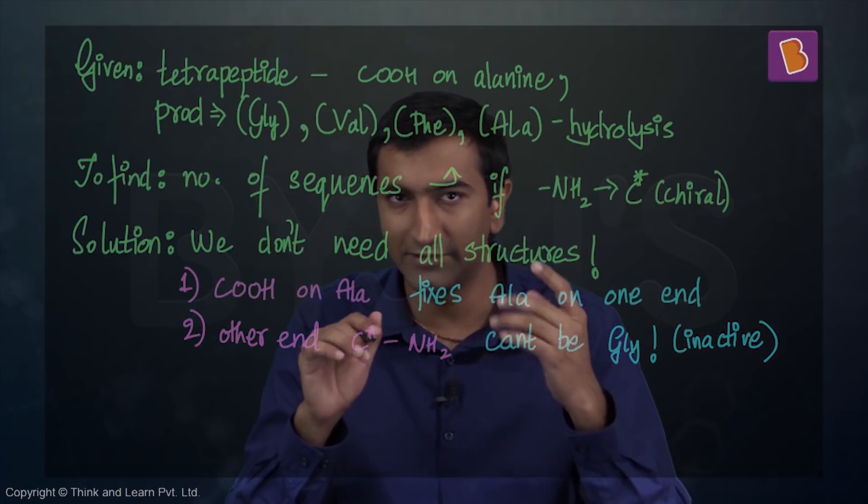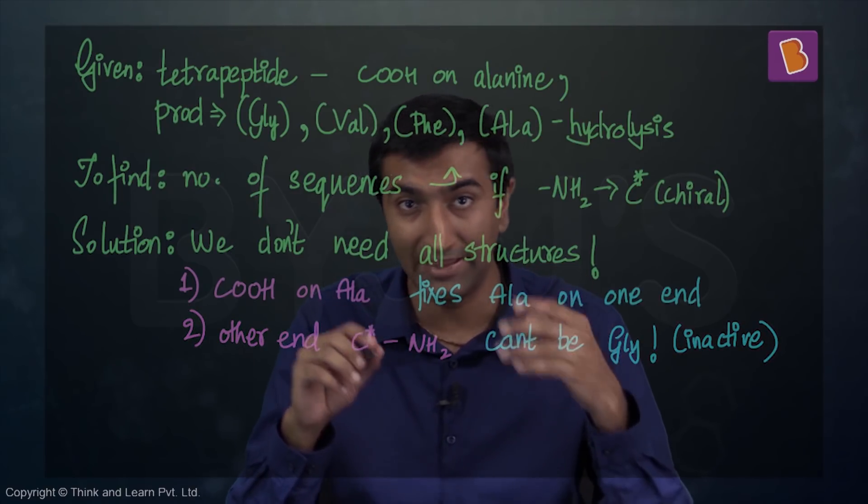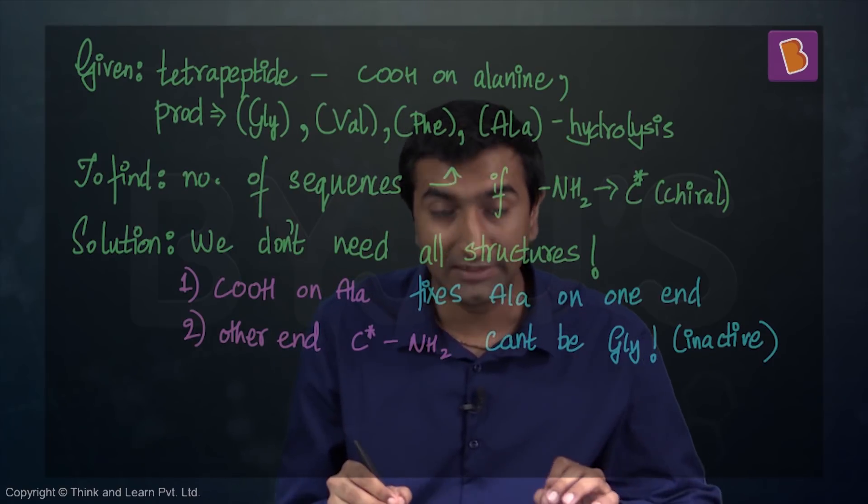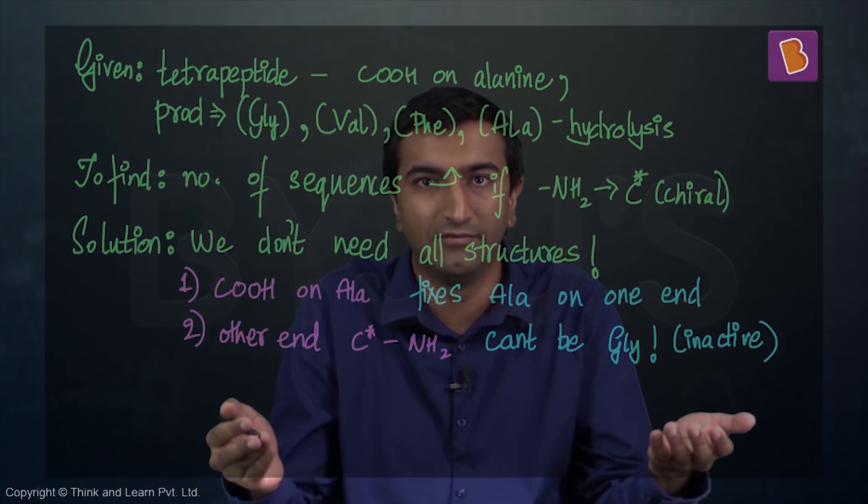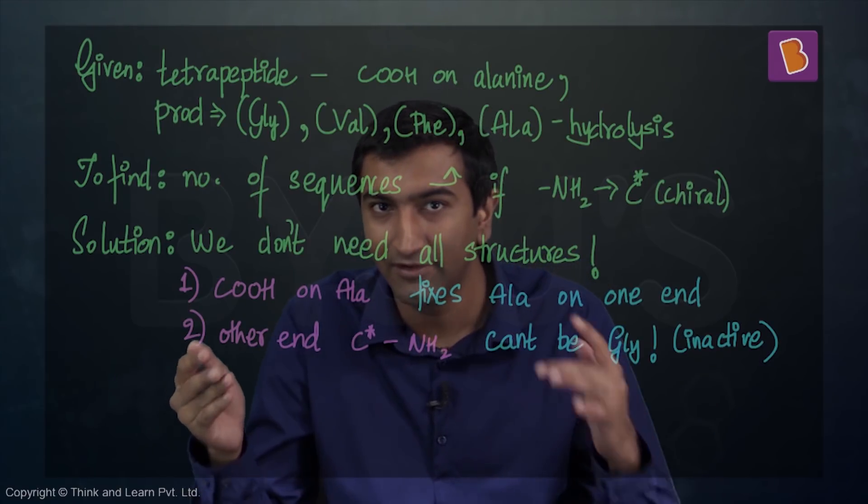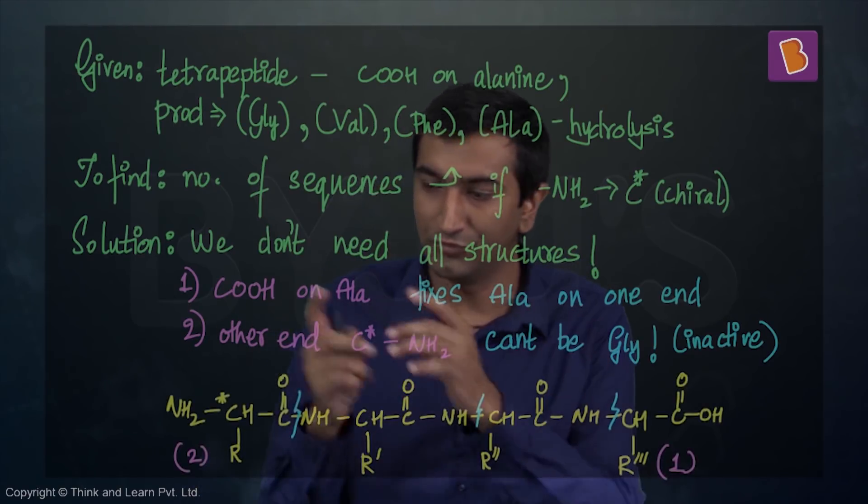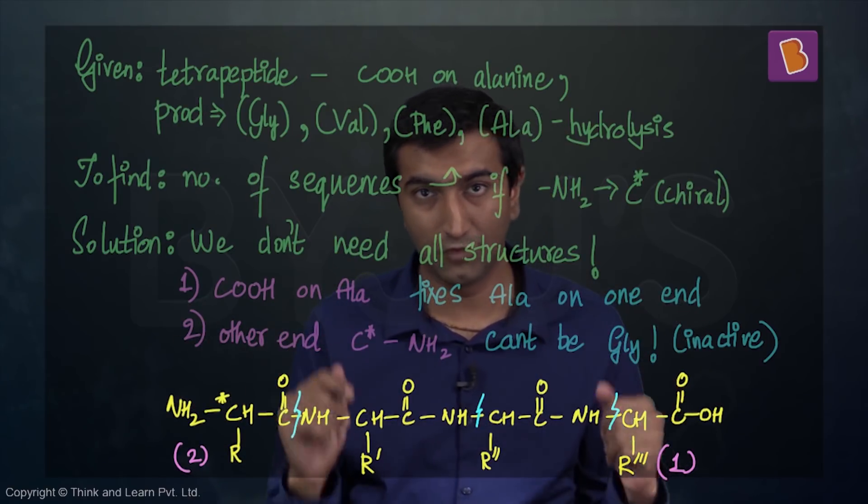This gives me two fixed positions. Ala is always going to be at the COH end, and glycine (Gly) cannot be at the chiral center because it's not optically active. These two conditions help us solve this. This is the whole compound, the whole tetrapeptide that you see over here.